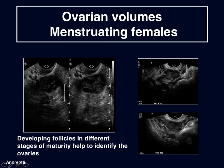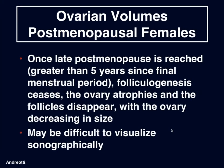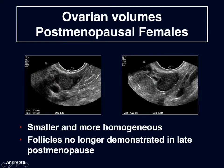Here are the ovaries with little tiny follicles. In postmenopausal females, once late postmenopause is reached — considered greater than 5 years since the final menstrual period — folliculogenesis ceases, the ovary atrophies, and the follicles disappear with the ovary decreasing in size. It may really be difficult to visualize these ovaries sonographically. Here we see a more homogeneous appearing ovary in sagittal and transverse views, and what you can note is that follicles are not present — this would be a patient in late postmenopause.